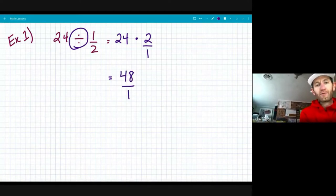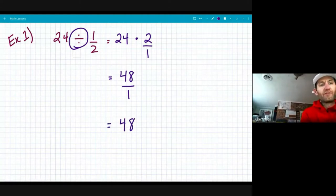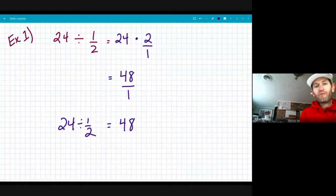And my denominator is one, which means that my answer is 48. So 24 divided by one half will equal 48.